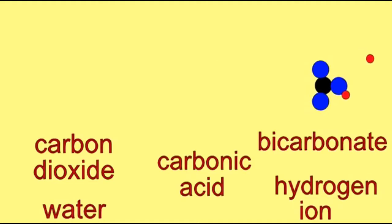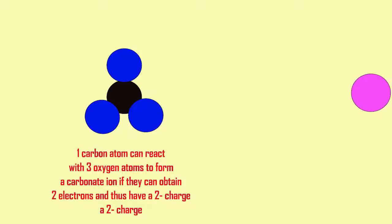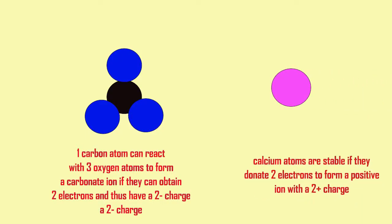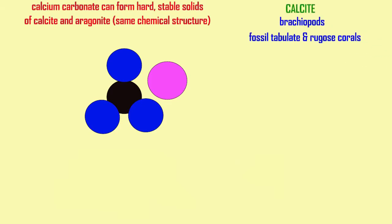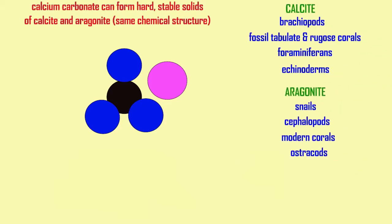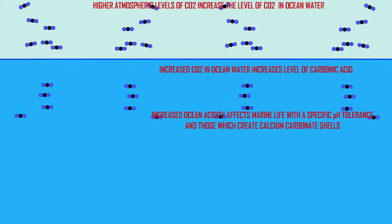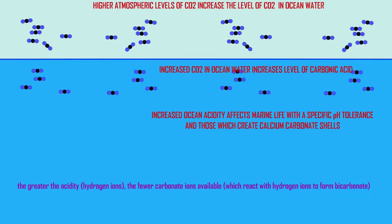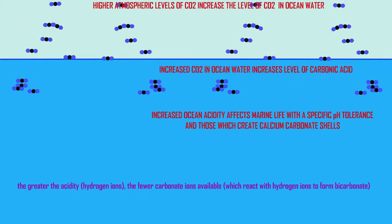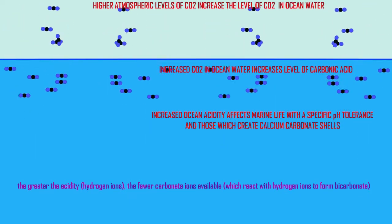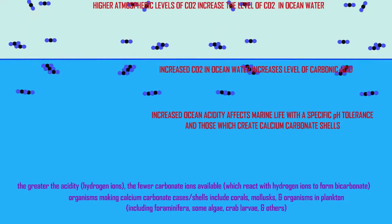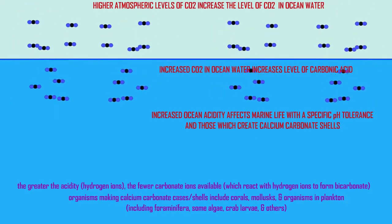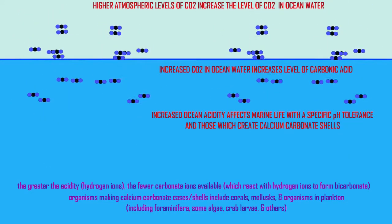Many marine organisms have specific pH tolerances, and it particularly affects those which create calcium carbonate shells or casings around themselves, because when there is greater acidity — when there are more hydrogen ions —